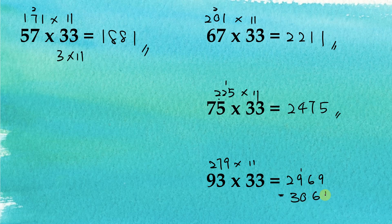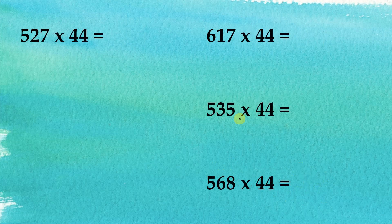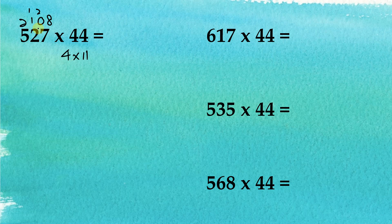Now let's look at multiplying three-digit numbers by 44. Again, 44 equals 4 times 11, so we multiply by 4 first, then by 11. For 527 multiplied by 4: 4 times 7 is 28, 4 times 2 is 8 plus 2 gives 10, and 4 times 5 is 20 plus 1 gives 21, so 527 × 4 = 2108. Then 2108 multiplied by 11 gives 2, then 3, then 1, then 8, then 8, so the answer is 23188.